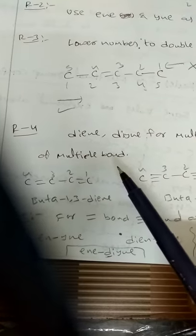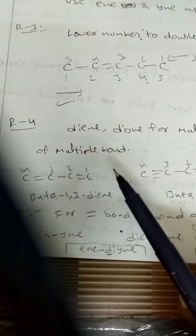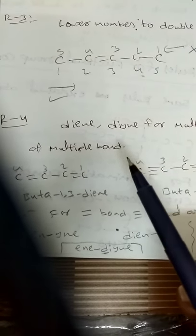Rule 4: use '-diene' and '-diyne' for multiple double or triple bonds. If a double bond or triple bond appears more than once, we use the prefix 'di-'. For example, two double bonds gives buta-1,3-diene, and two triple bonds gives buta-1,3-diyne.